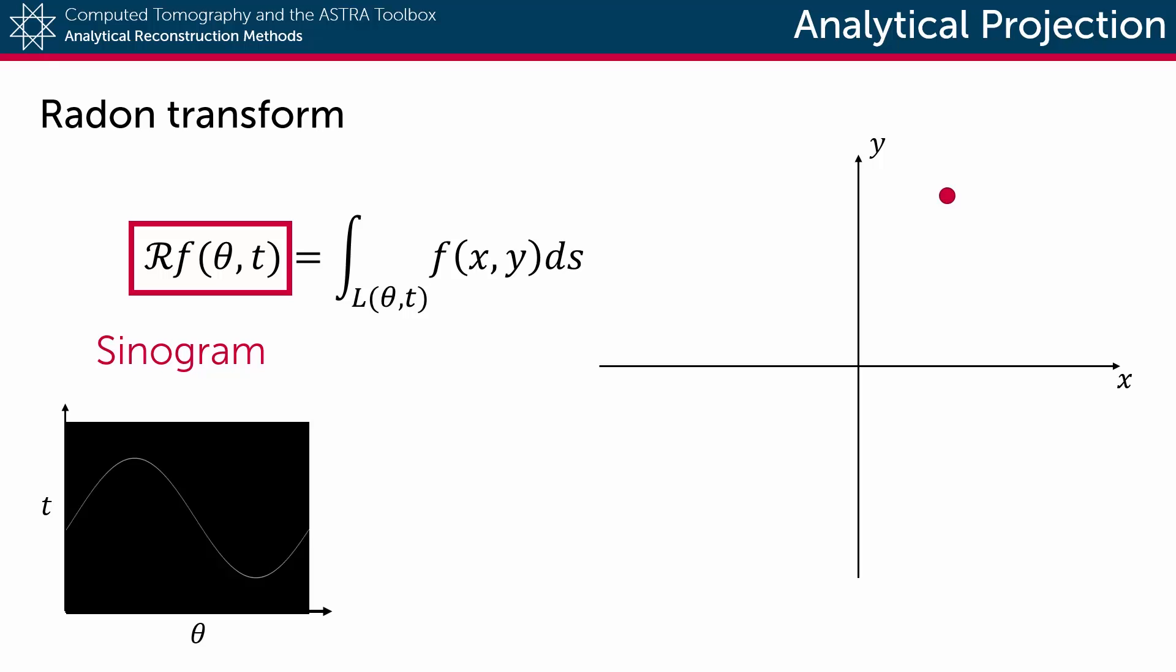Important to note here is that the Radon transform is in fact a linear operator. And given that each possible object function can be expressed as a linear combination of endless Dirac delta functions, we can say that the projection of any object is basically the sum of a number of sine waves.